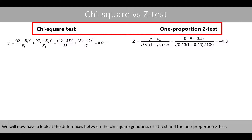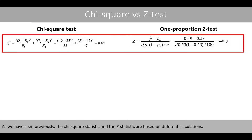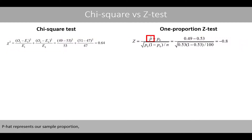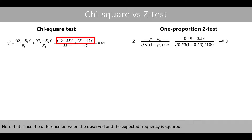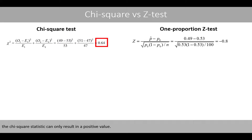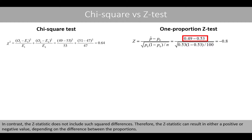We will now have a look at the differences between the chi-square goodness of fit test and the one-proportion z-test. As we have seen previously, the chi-square statistic and the z-statistic are based on different calculations. p-hat represents our sample proportion, p-zero the proportion according to the null hypothesis, and n is the sample size. Note that since the difference between the observed and expected frequency is squared, the chi-square statistic can only result in a positive value. In contrast, the z-statistic does not include such squared differences, and therefore can result in either a positive or negative value, depending on the difference between the proportions.